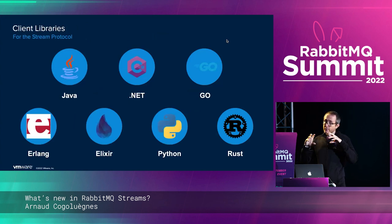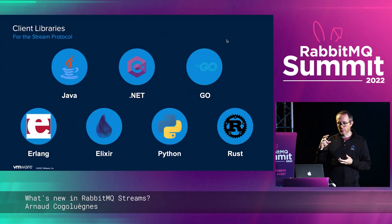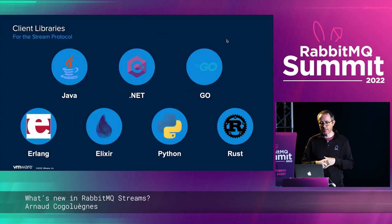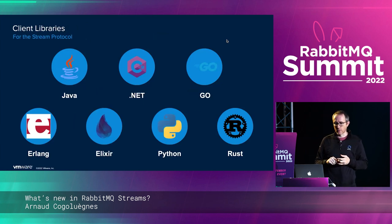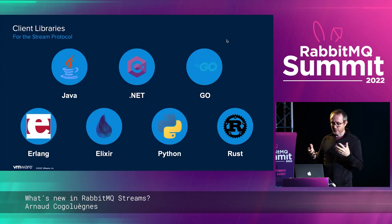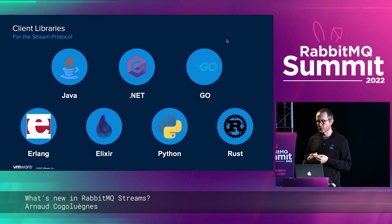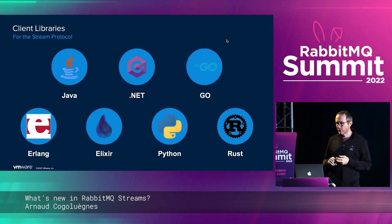For the stream protocol we knew we needed new client libraries. We maintain three in the RabbitMQ team: for Java, .NET, and Go, with contributions from the community. Some people from the community also started their own projects — there are libraries for Erlang, Elixir, a couple for Python, one for Rust, and one was announced last week for JavaScript.